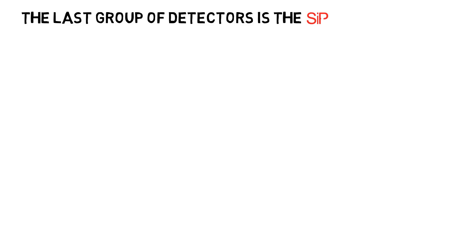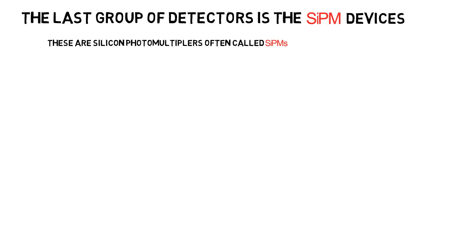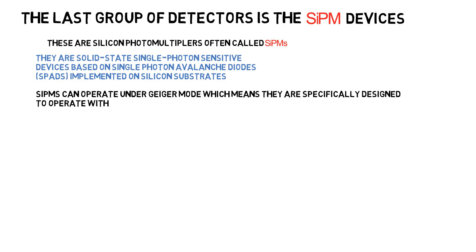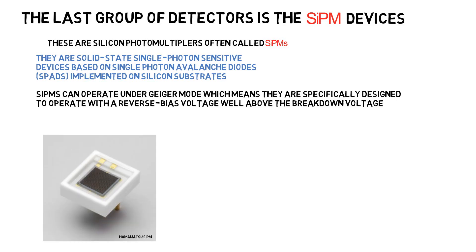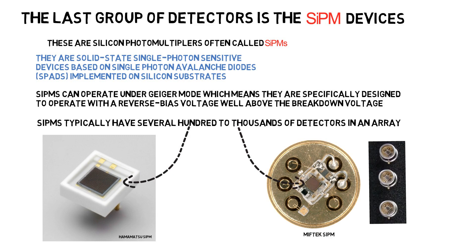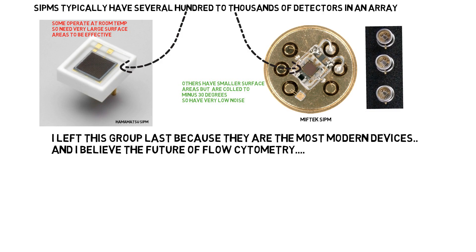The last group of detectors is the SiPM devices — silicon photomultipliers, often called SiPMs. They are solid-state single-photon-sensitive devices based on single-photon avalanche photodiodes, often abbreviated as SPADs, implemented on silicon substrates. SiPMs can operate under Geiger mode, meaning they are specifically designed to operate with a reverse bias voltage well above the breakdown voltage. SiPMs typically have several hundred to thousands of detectors in an array. I left this group for last because they are the most modern devices, and I believe they represent the future of flow cytometry.